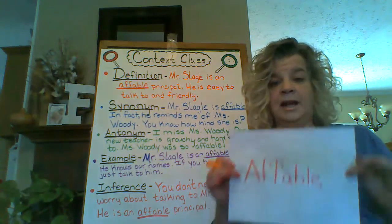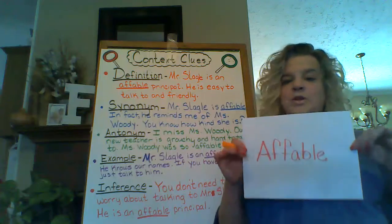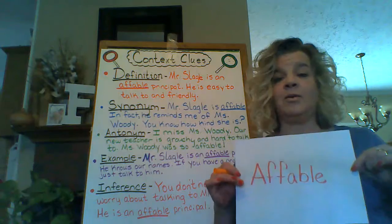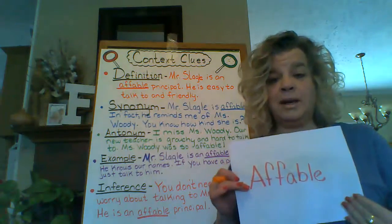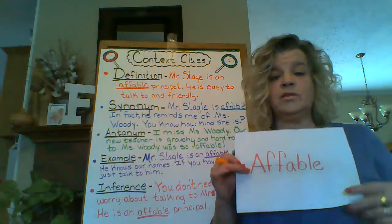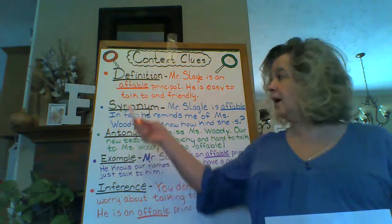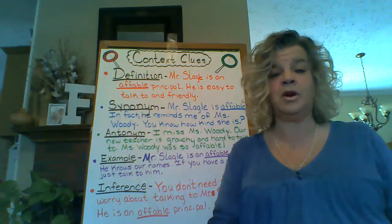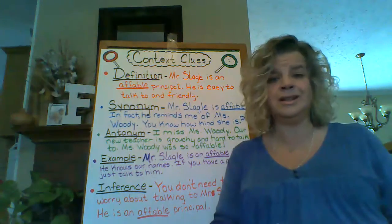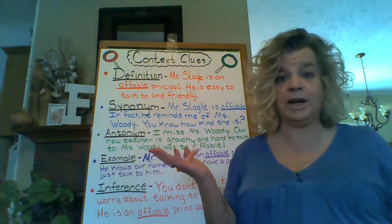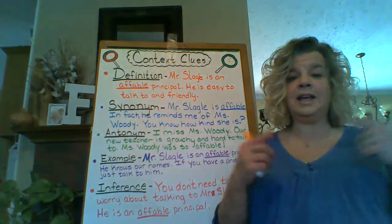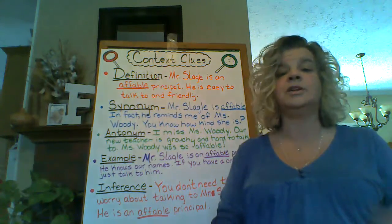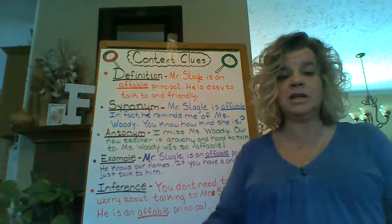So we're going to be looking at the word today: affable. Most of you might not know what affable means, but you will after today, because we're going to figure out how to understand what affable means by using our context clues. So the first way we're going to look at that is by definition. If we use definition to figure out context clues, the author just gives it to you free. Not much in life is free, but if the author does use definition in the text for context clues, they're just giving you the answer.